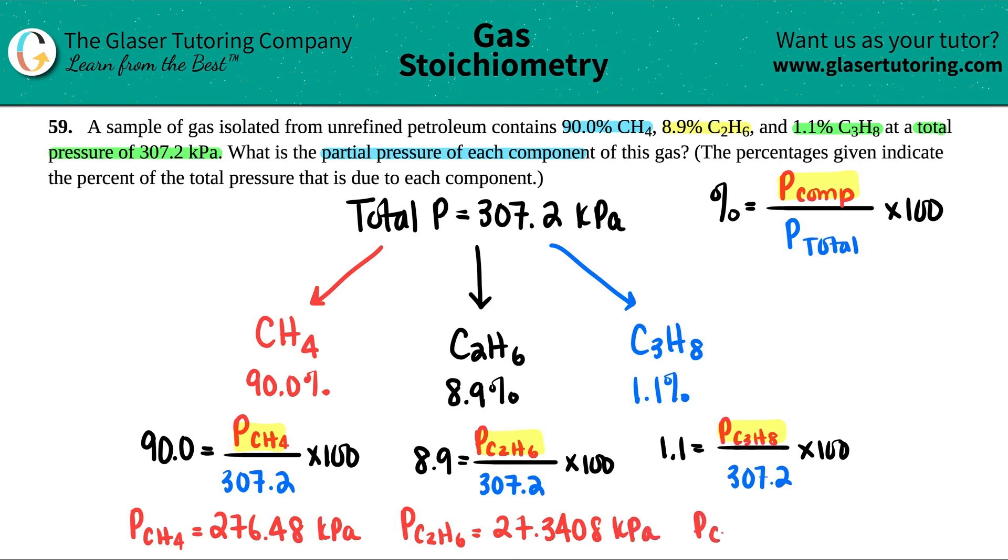And then lastly, the pressure of C3H8 would be 1.1 divided by 100 times 307.2, and that's 3.3792, and that's kilopascals. And there you go. Those are your individual partial pressures.